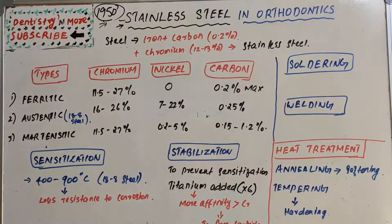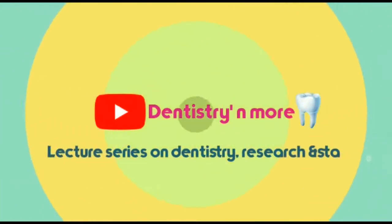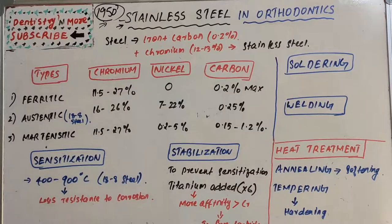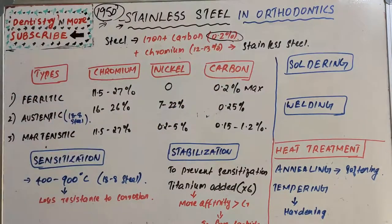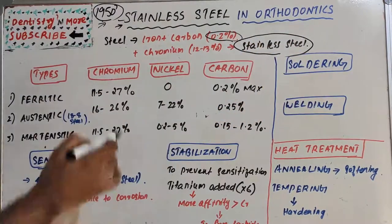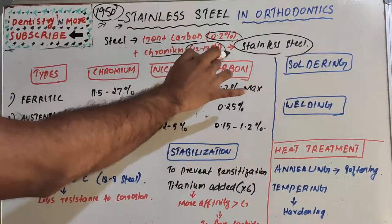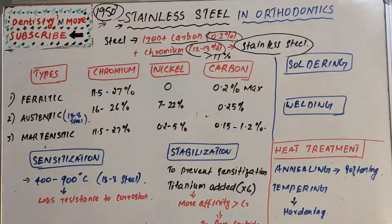Let's learn about stainless steel. As we all know, steel is an alloy of iron containing carbon which is less than 0.2%. When we add chromium to the steel — around 11% or more than 11% — that alloy is referred to as stainless steel. So stainless steel has iron, carbon, and chromium, where chromium will be more than 11%.